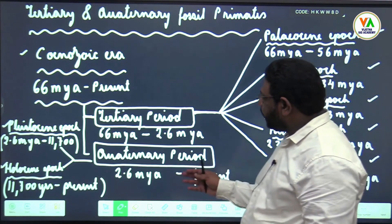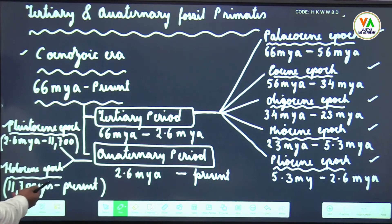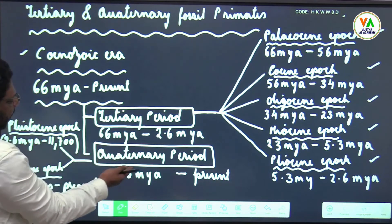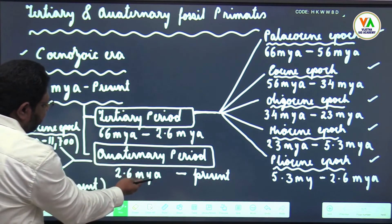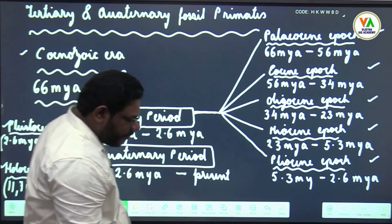And then in Quaternary epoch you have Pleistocene and Holocene. There are some variations in time duration - some sources say 3 million years to 10,000 BC, others say 10,000 years BC to present. So do not be bothered about the time duration.